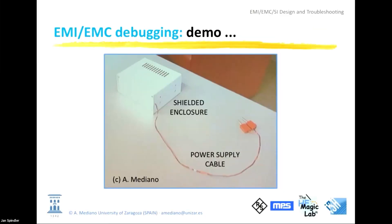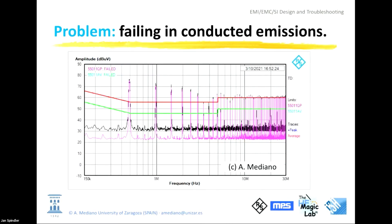So let's go to the demo. I will be using the same box as yesterday — a metallic box with a power supply cable — and we are going to measure conducted emissions. In conducted emissions, we start from 150 kHz up to 30 MHz. You will see two limits: the quasi-peak limit and the average limit.